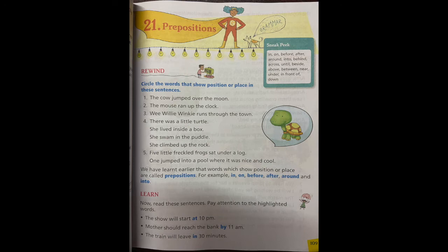Wee Willie Winkie runs through the town. Where? Through. Circle through. There was a little turtle. She lived inside a box. Where did she live? Inside. Yes, inside is the position. Circle it.